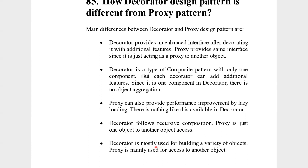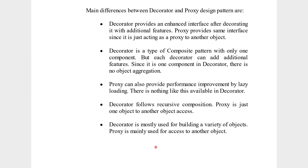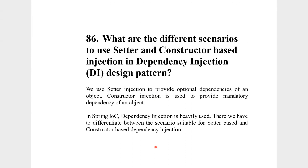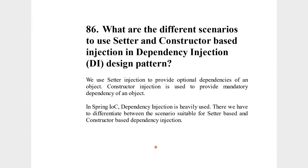The decorator is usually used for building a variety of objects — the best example is FileInputStream. The proxy is mainly used to access another object when you don't want to expose what is actually being accessed underneath.